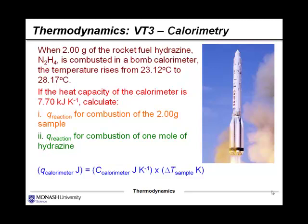Here's a sample bomb calorimetry problem. Two grams of the rocket fuel hydrazine is combusted in a bomb calorimeter, and the temperature rises from 23.12°C to 28.17°C — an increase of 5.05 degrees Celsius, which is the same as 5.05 kelvin. In these kinds of problems you don't need to convert between Celsius and kelvin, because you're substituting delta T into the equation. If you were subbing in a raw temperature value it would need to be in kelvin, but for delta T it doesn't matter — both scales give the same difference.